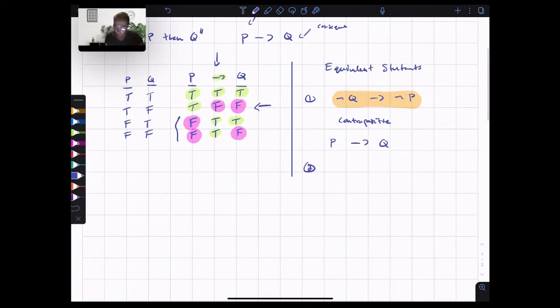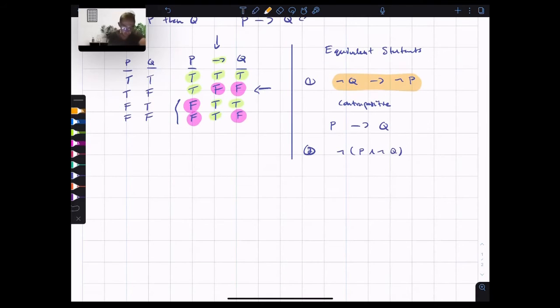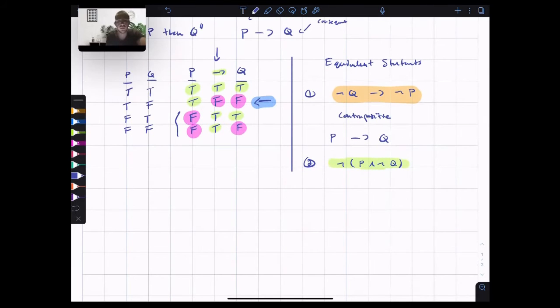Okay, statement number or equivalent statement number two, and this one is also very important. This is, it's equivalent to not P and not Q. And this comes directly from this line of the truth table. We are saying that P then Q is false if P is true, so we have P and Q is false, so we have not Q. P and not Q is what's going on here. P is true, Q is false, so not Q is true.